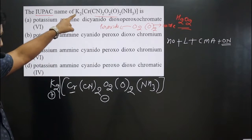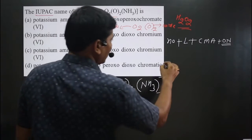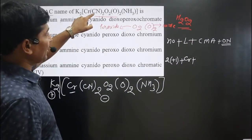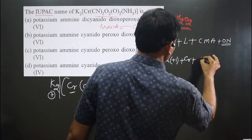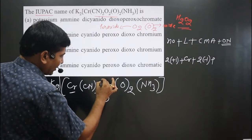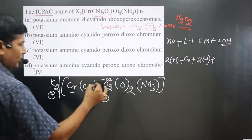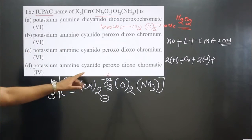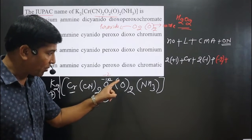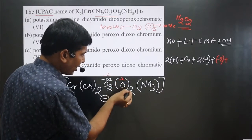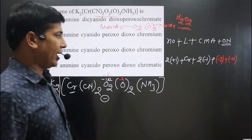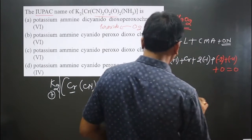Now let's calculate the oxidation number. Potassium is +1, so 2 × (+1) = +2. For chromium, let it be Cr. Cyanide (CN⁻) is a negative unidentate ligand, so 2 × (−1) = −2. For the peroxide O₂²⁻, oxygen is always −1 in peroxide, so two oxygens give an overall charge of −2. For the common oxide (O)₂, one oxygen is −2, so two oxygens give −4. Ammonia is neutral, contributing 0. The overall charge of the complex equals zero.